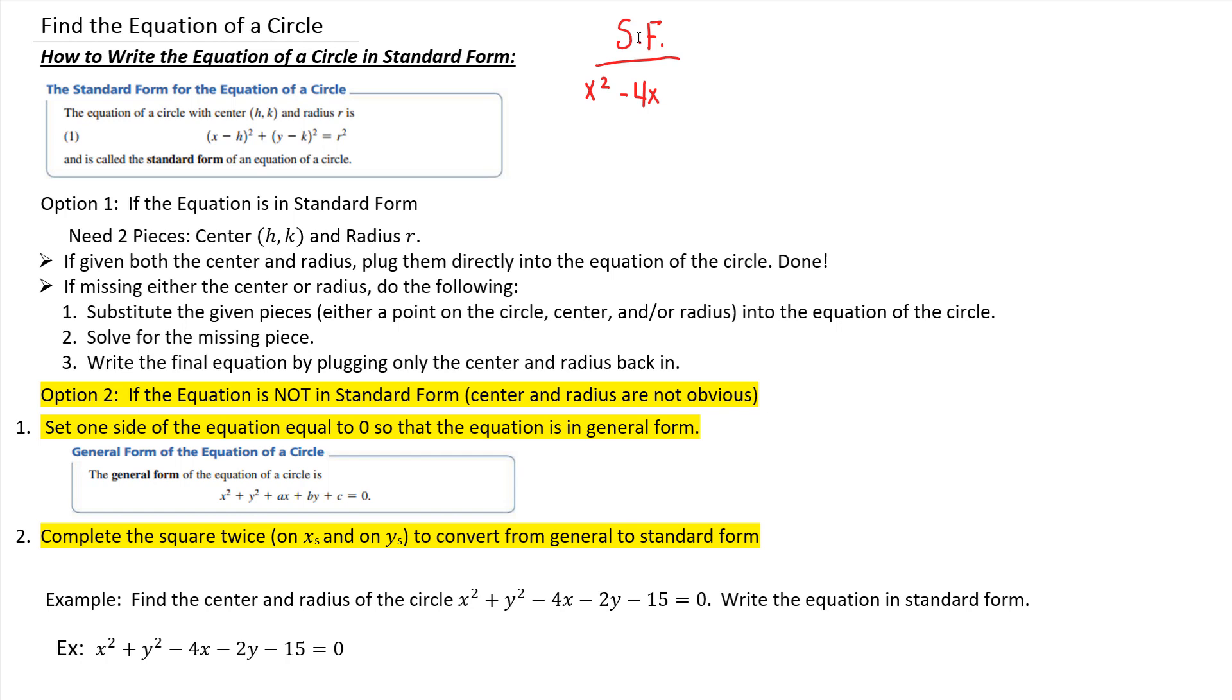Leave a little space for my completing the square step. Then take my y pieces and put them next to each other. So I have plus y squared minus 2y. Leave a little space. Then I'm going to move my constant over by adding 15 to both sides. So it was minus 15 on the left, and now positive 15 on the right.